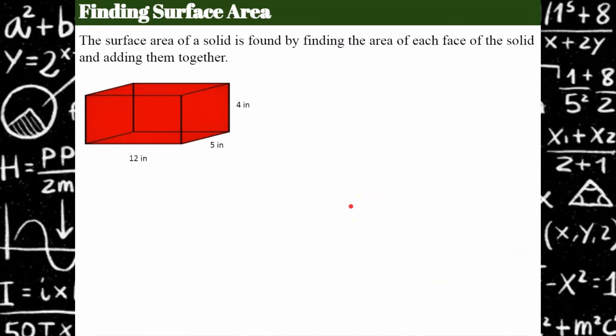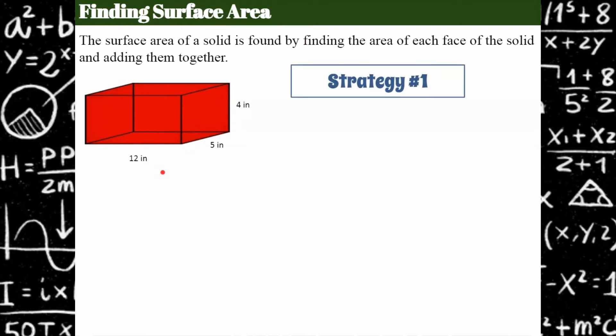That leads into what we're going to do next: finding surface area. When finding the surface area of a solid, we find the area of each face and add them together. Think about needing to know how much paint you need to paint a room, how much wrapping paper to wrap a box, or how much cardboard to make a box — this is the surface area. We have two ways to do this.